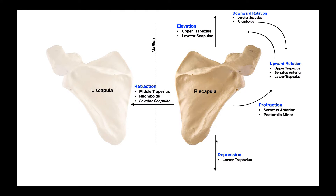For depression, by itself there's not a lot of range of motion from the scapula's base position. Normally we think of depression as: once the scapula is elevated, bringing it back down to its resting position is depression — plus a little extra inferior movement. Depression is facilitated by the lower trapezius.